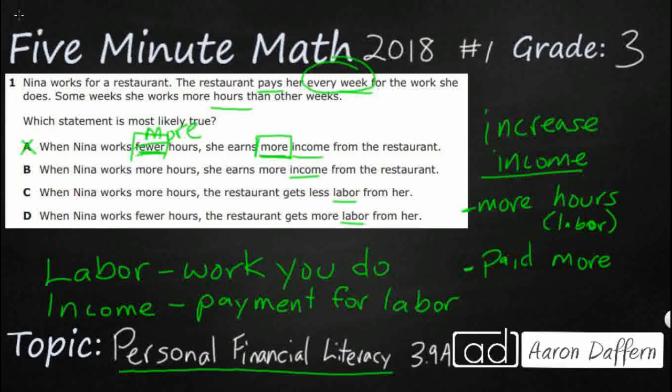Let's look at B: when Nina works more hours, she earns more income. That's exactly what we've been saying, so I'm thinking B is going to be correct. More hours means more money — that makes perfect sense.